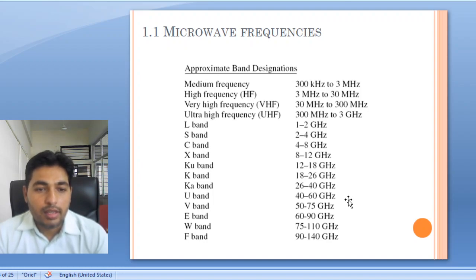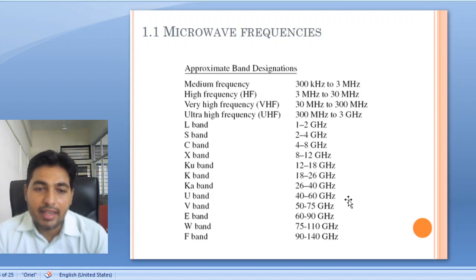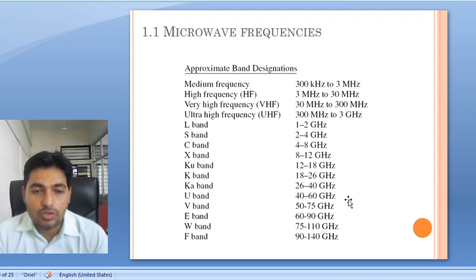The Ku band — where U stands for upper, upper to K — is from 12 to 18 GHz. Then K band is from 18 to 26 GHz. Then Ka band, that is above K, is from 26 to 40 GHz and so on. These bands are designated with each band having different applications.